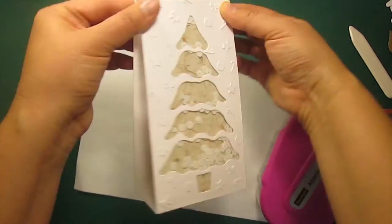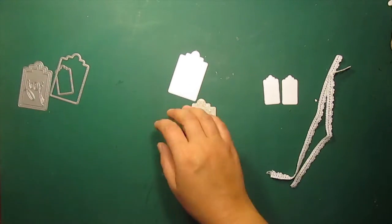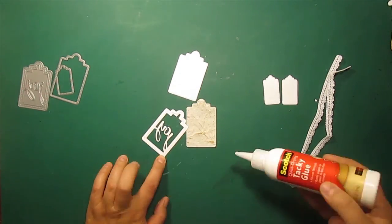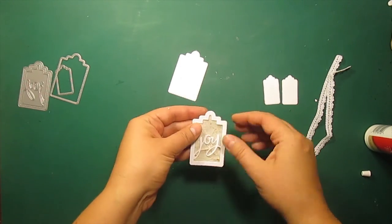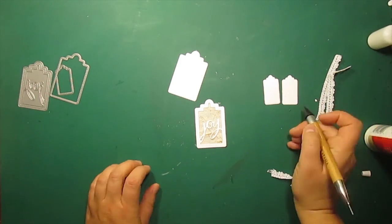To make a tag I'm using this joy tag die by poppy stamps and a matching background. I'll use the same white cardstock and mulberry paper. Notice that I only applied glue to the frame and not to the sentiment.